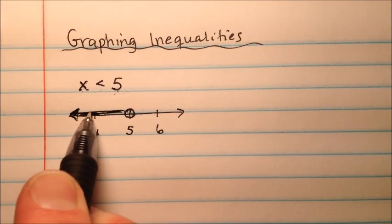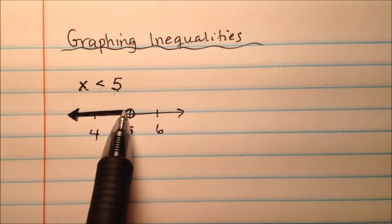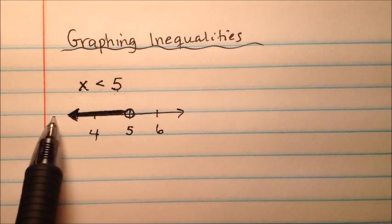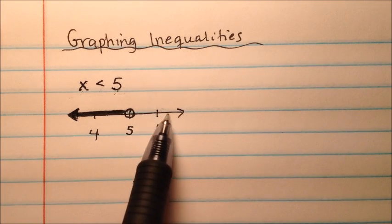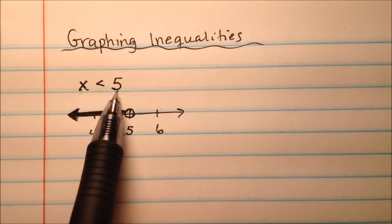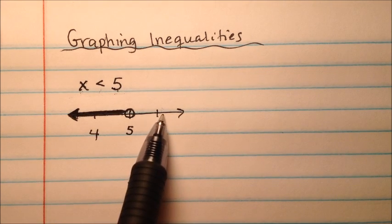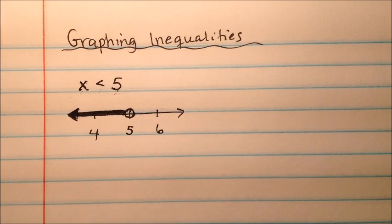So what this means is all the values that are shaded are all the numbers less than 5. So 4, 3, 2, 1 off the page and way to the left. And so let's say is 6 a solution of this inequality? Well, is 6 less than 5? Well, no, it's not. That's why we didn't shade this side. We only shade the stuff that makes it true.